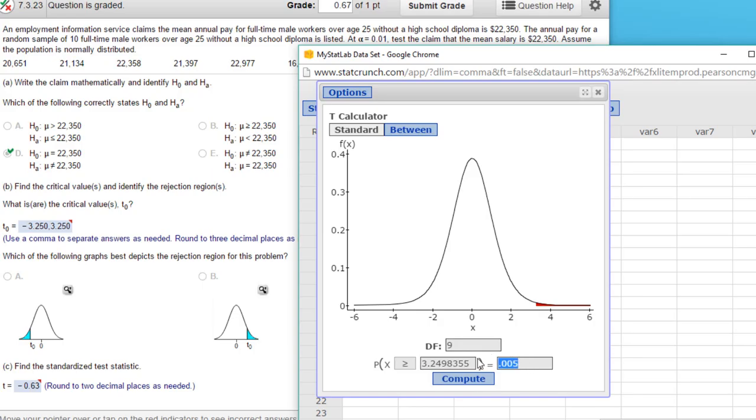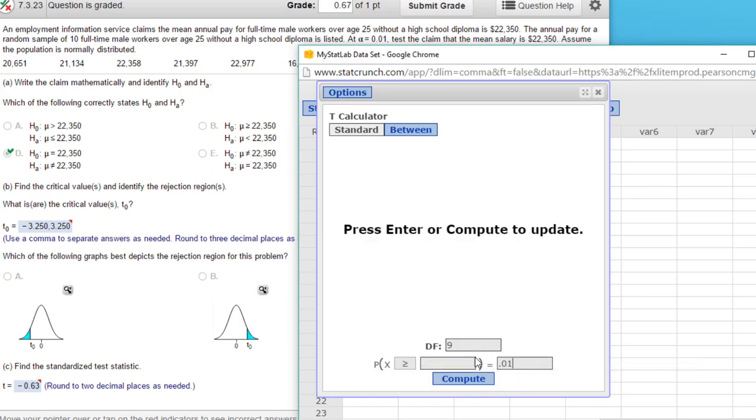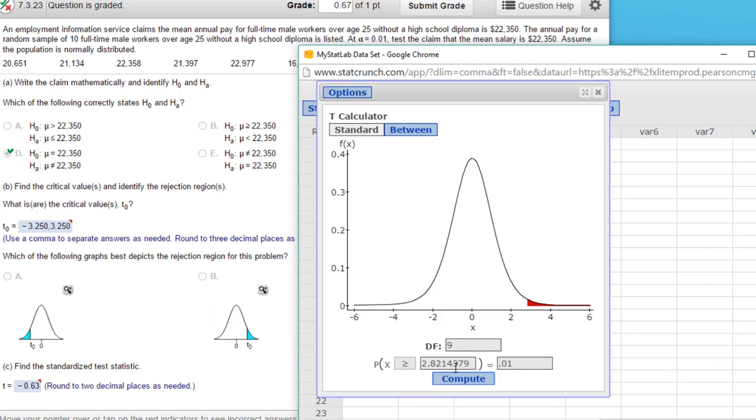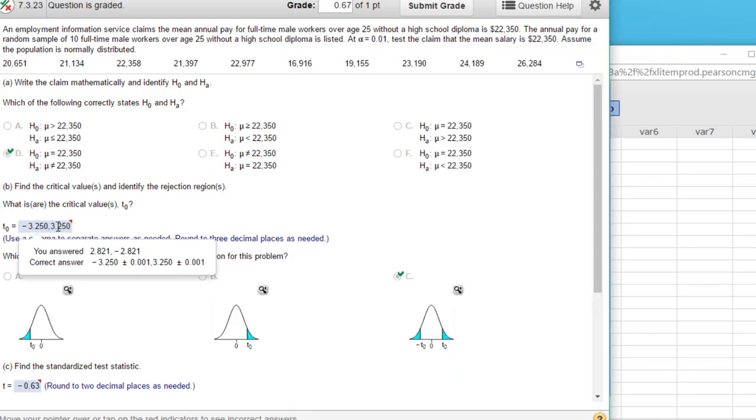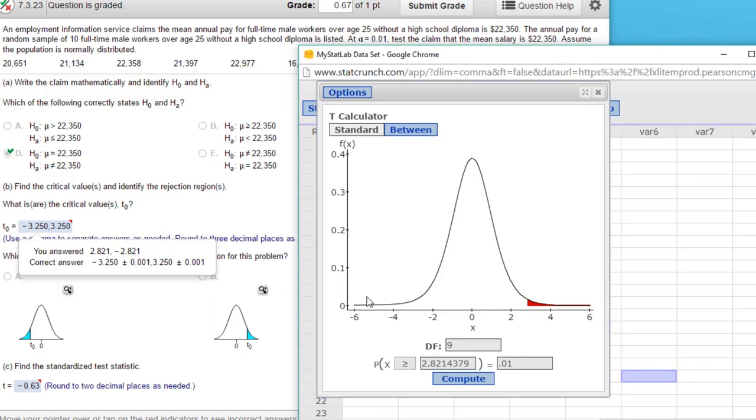Let me see. If I put in 0.01, what do I get? 2.821. And I think that's what you got. So what you forgot to do was since you've got a two-tailed test, you got to divide alpha by 2 to get the critical value.